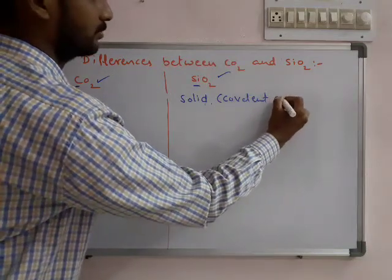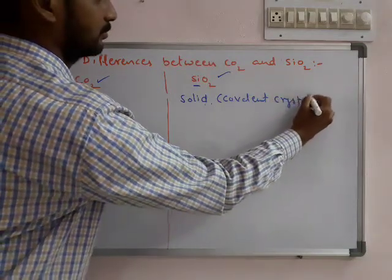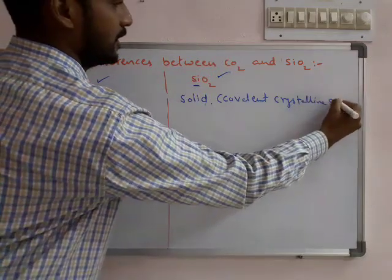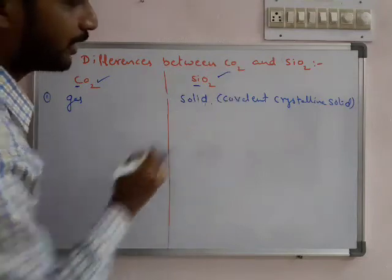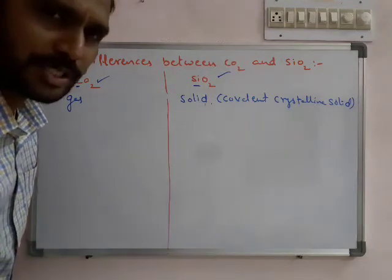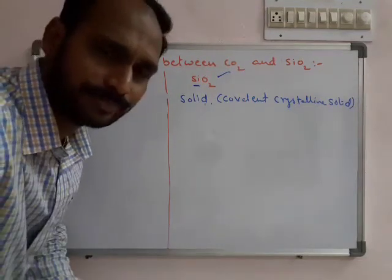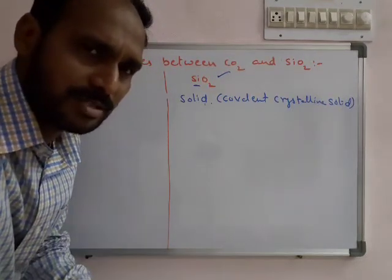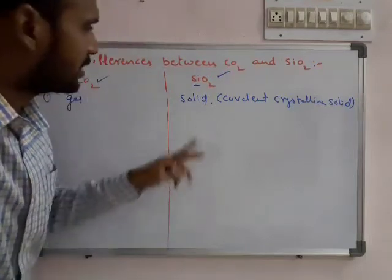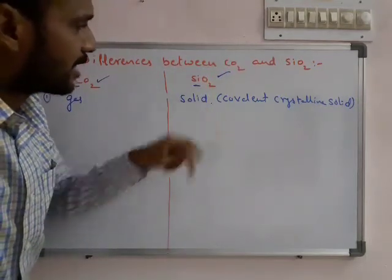Generally, in covalent compounds very few crystals exist - diamond, graphite, boron nitride, aluminum nitride. Very few crystals are there, but one of the crystal solids is SiO2. So this is gaseous form, this is solid form.